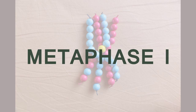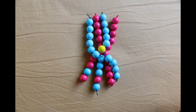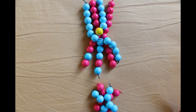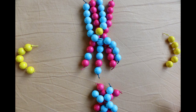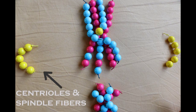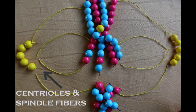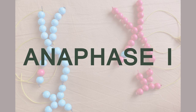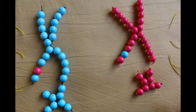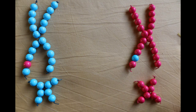Now that we're done with that, we move on to metaphase one. The homologous chromosomes line up in pairs in the middle of the cell and attach themselves to the centrioles at either end of the cell. In anaphase one, they're pulled apart in half, each homologous chromosome going to one side of the cell.